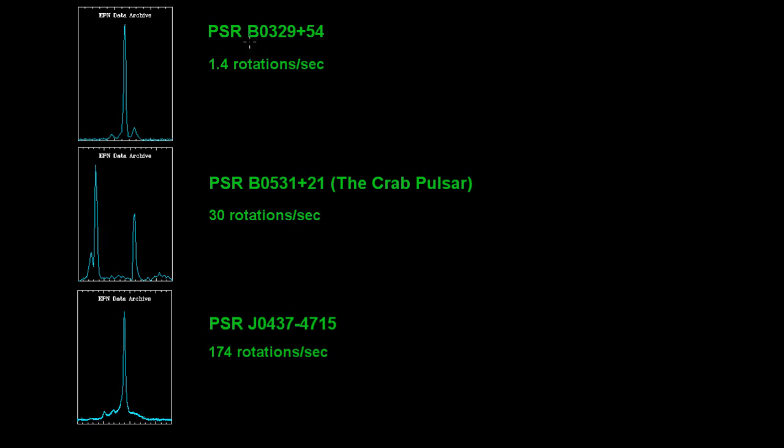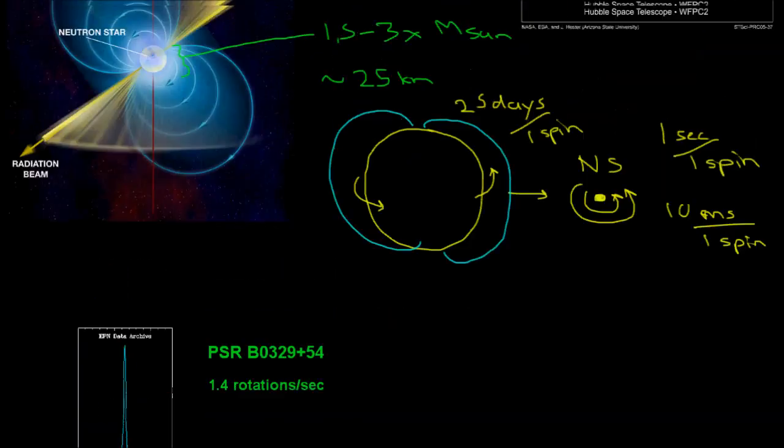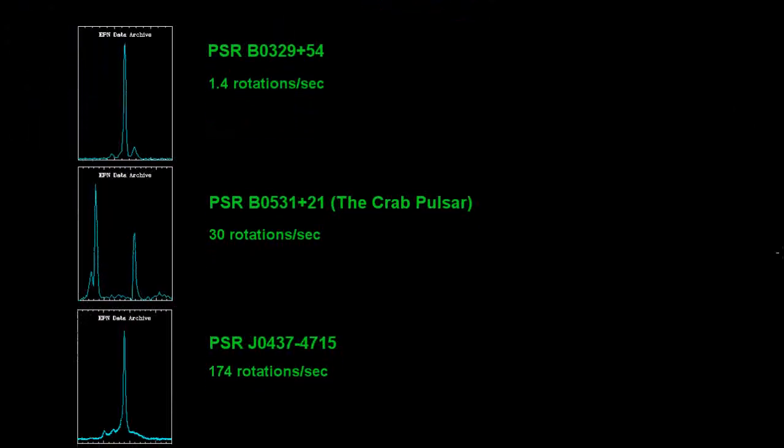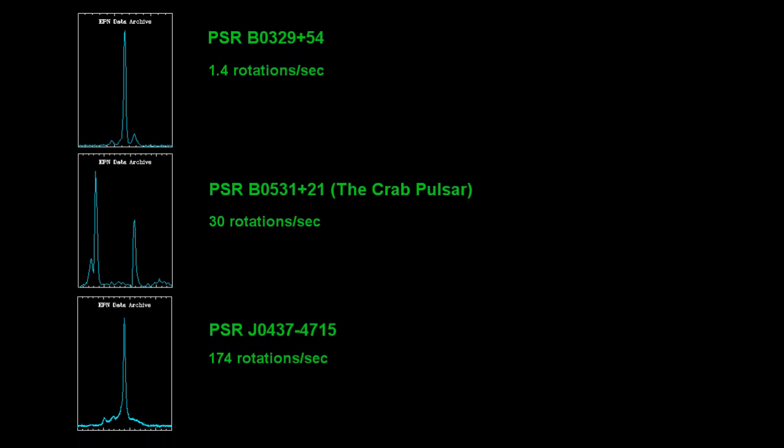And the first pulsar we're going to listen to is B0329+54. Now these pulsar names basically correspond to their location in the sky. It's the right ascension and declination, but it's not that important. So this first pulsar rotates at 1.4 rotations per second. So that repeating blip pattern is really what is happening every time this pulsar rotates. Every time it points towards the earth we see this little burst of radio waves and this one rotates 1.4 times per second. So the next pulsar that we're going to look at is the crab pulsar. And this pulsar rotates 30 times per second.